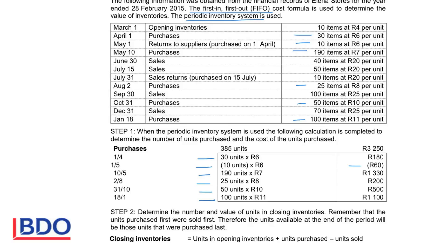Adding all these units together, the total number of units purchased comes to 385, and the total cost of those 385 units was R3,250. So my first step is to determine how many units we bought during the current year and what the total expense of all units purchased during the year was.